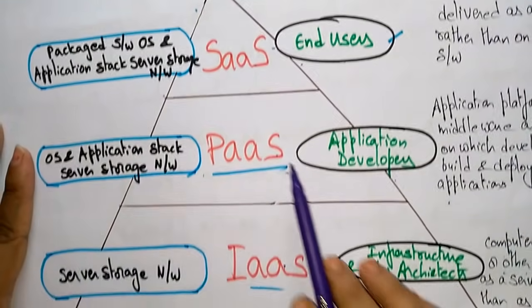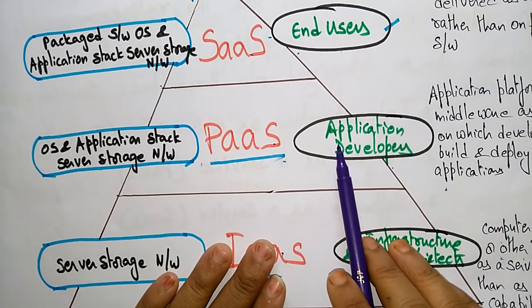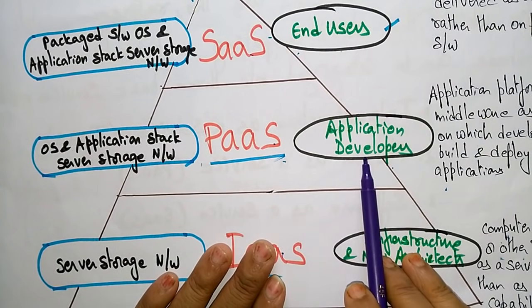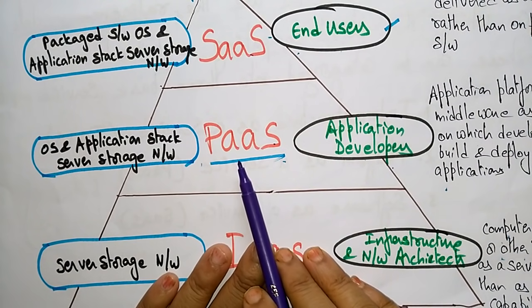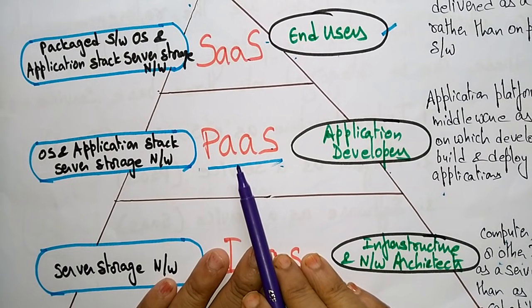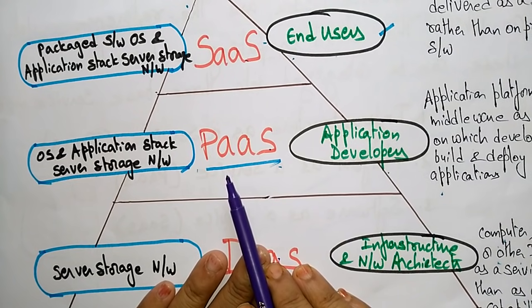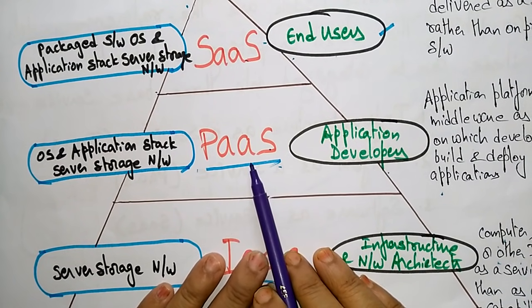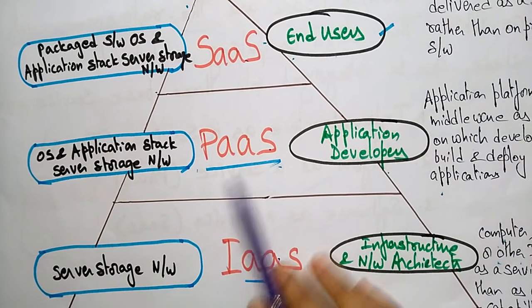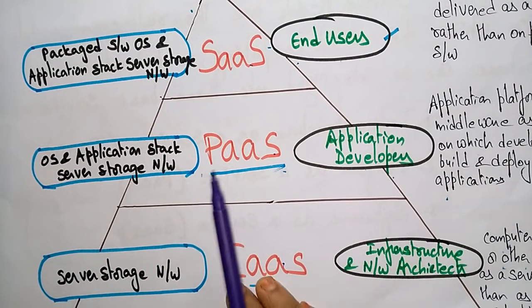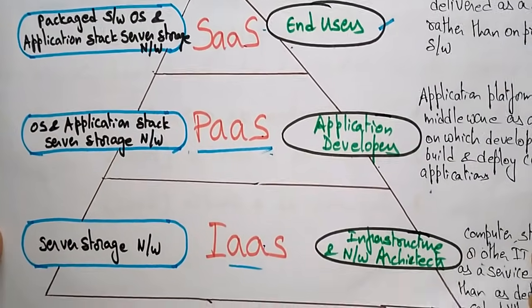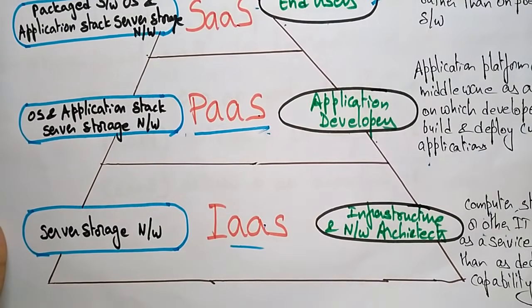Software as a Service consists of packaged software, operating systems, application stack, server, storage, and networks. Platform as a Service consists of application developers who develop applications using the platform provided by the cloud. It provides application platforms or middleware as a service on which developers can build and deploy custom applications, and it also consists of operating systems and application stacks, server, storage, and networks.